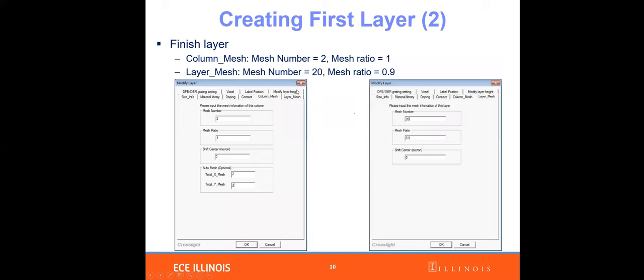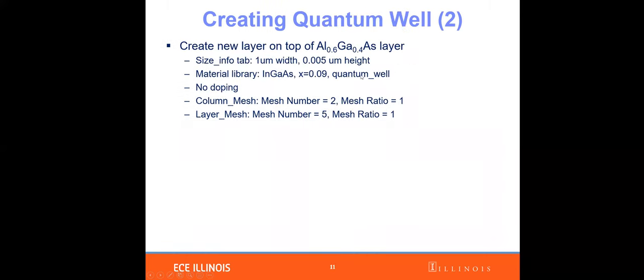Our first layer is N-type aluminum gallium arsenide. We then provide mesh information for layer mesh and column mesh. Next, we create the intrinsic layer. Because this is an LED structure, we want a quantum well to capture electron-hole pairs for radiative recombination. We create a new layer on top of the N-type AlGaAs — a five nanometer thick quantum well of indium gallium arsenide with 0.09 indium mole fraction. This is the intrinsic layer with no doping.